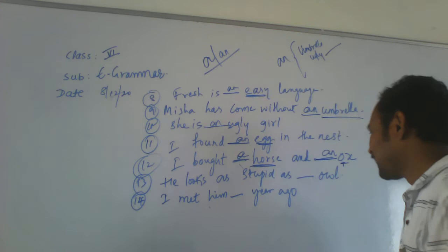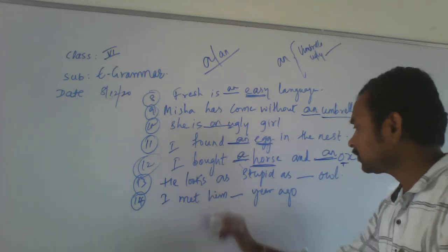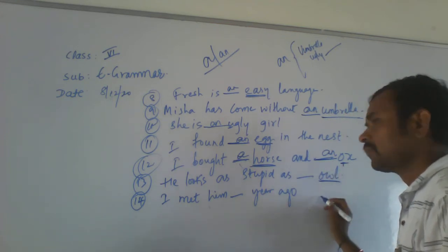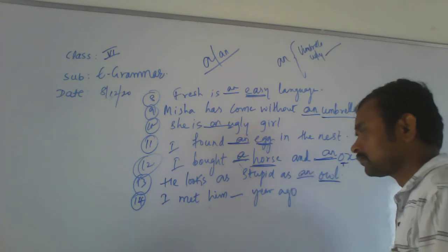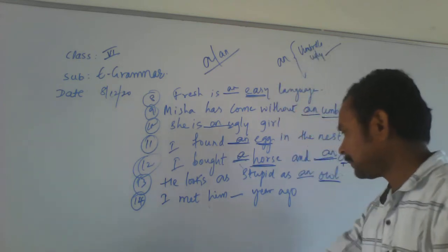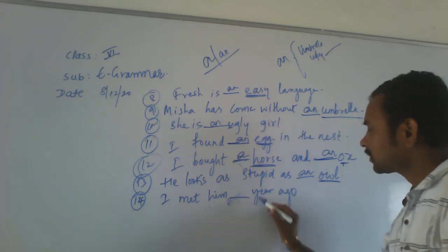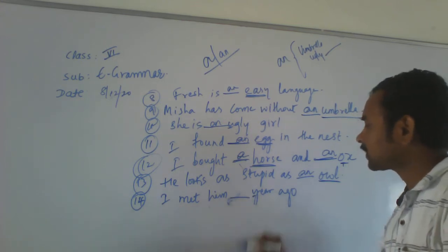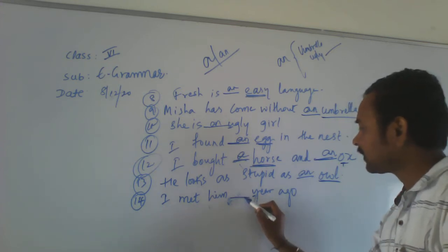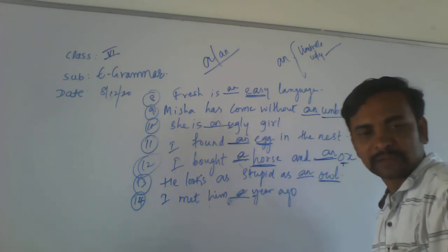He looks as stupid as blank old. This word 'old' starts with a vowel O, so we use AN. He looks as stupid as an old one. Next example: I met him blank year ago. Look at the word 'year.' Year starts with a consonant sound Y. So, what article do you have to write? A. I met him a year ago.